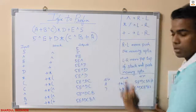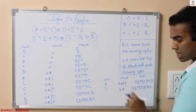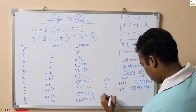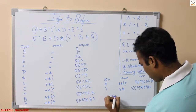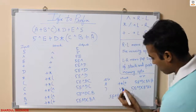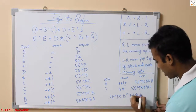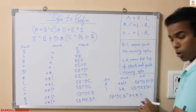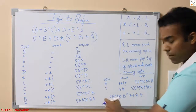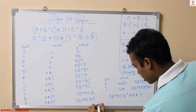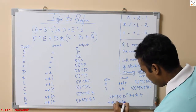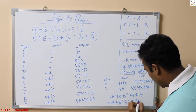Now we have scanned all the elements from left to right, but still our stack is not empty. So we will pop all the elements from the stack. The final output we get is: 5, E, power, D, C, B, power, A, plus, then pop star from the stack, and then plus. Now we got this final output, but we have to convert it to prefix. Since we reversed the expression at the start, we will again reverse our final output. So the final prefix expression will be: plus, star, plus, A, power, B, C, D, power, E, 5.